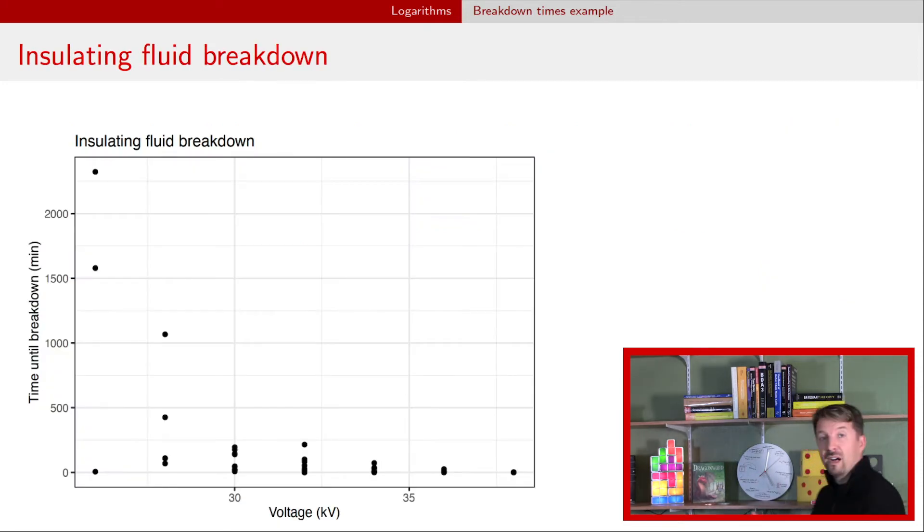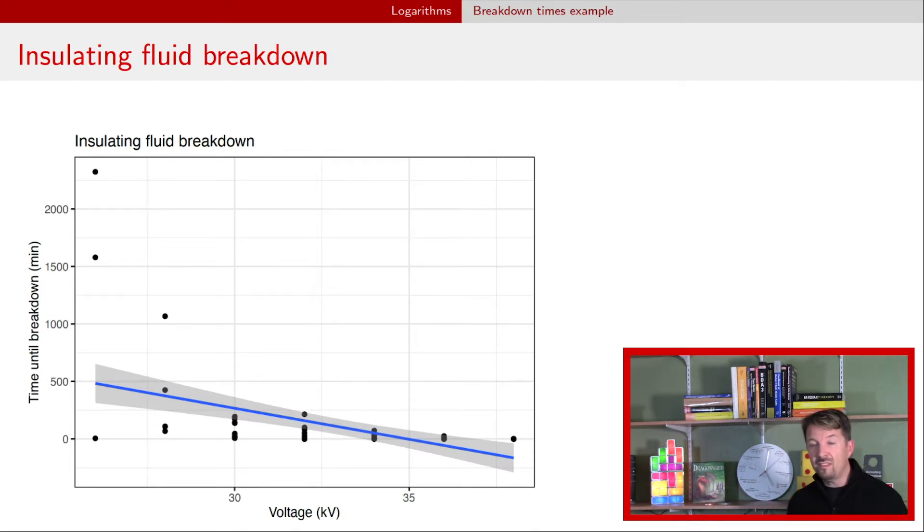All right, so here's just a plot of that time as our response on the y-axis versus our explanatory variable, the voltage that was applied. And here what we can see is that most of the observations are pretty small. That is, in some sense when voltage gets too high, the breakdown time is pretty quick. Whereas when voltage is not so high, then it takes a while sometimes for that fluid to break down. If you go ahead and fit a regression line to these data, this is what it looks like. Hopefully, it's clear to you that this does not seem like a very appropriate model for these data. I mean, it doesn't really fit the data points that well. But you can also see that when voltage is small, there's sort of a wide spread of observations. Whereas when voltage is big, the spread of observations is pretty narrow.